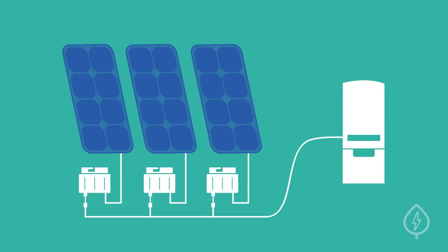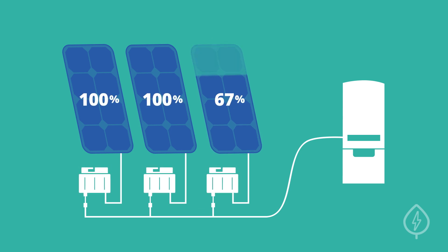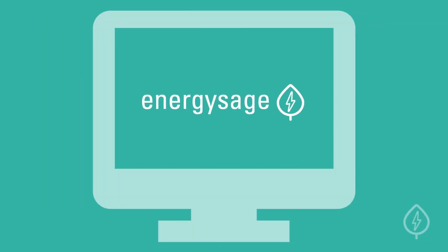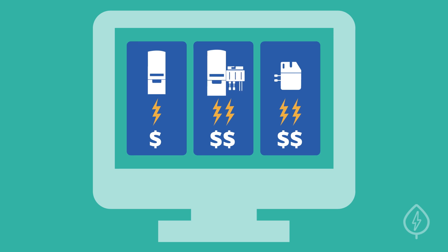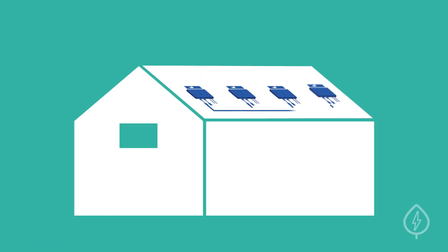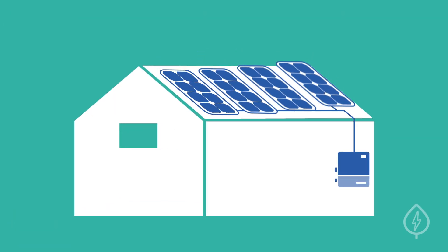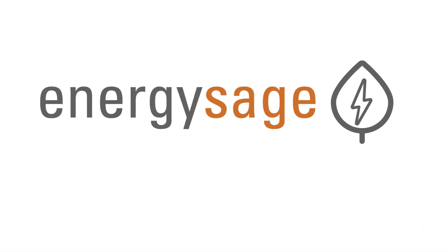Like with microinverters, if one solar panel with a power optimizer is underperforming because of shade or other factors, the rest of the panels will continue performing efficiently. On EnergySage, you can compare the performance and price of multiple inverter options so that you can install the right solar equipment for your needs. EnergySage — Smarter Energy Decisions.